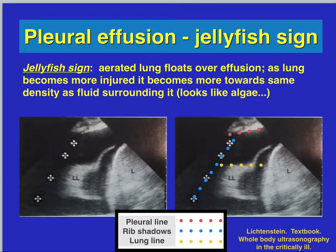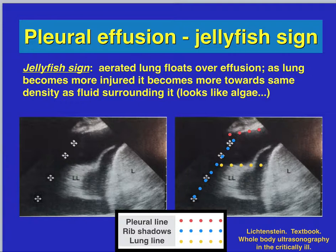The jellyfish sign is aerated lung that floats over the effusion. As the lung becomes more injured, it becomes closer in density to the surrounding fluid and looks kind of like algae. The jellyfish sign is usually seen early when pleural effusions have just accumulated.